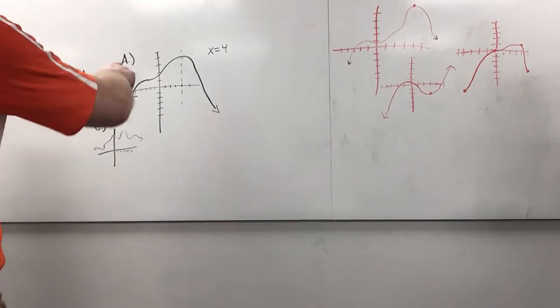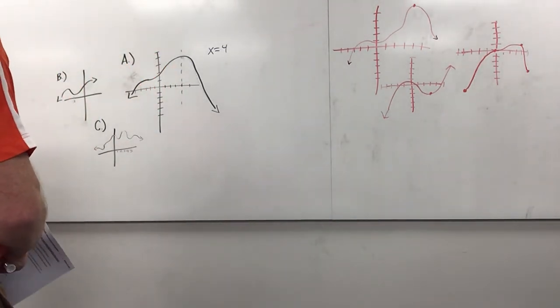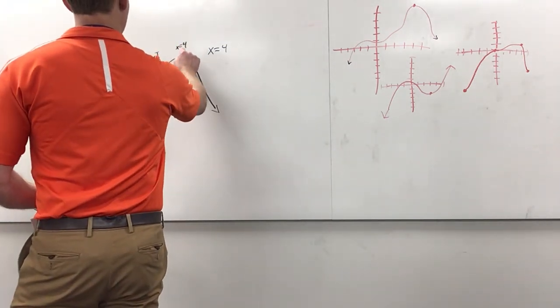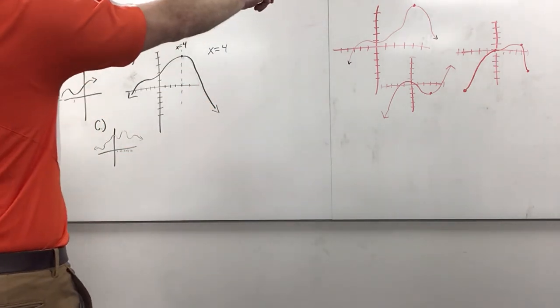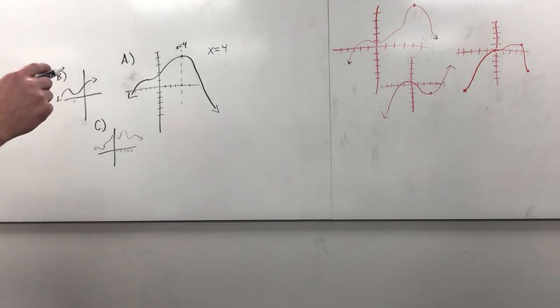So for part A, we said an absolute maximum at x equals 4. Here's x equals 4, and this would be the highest point there. It's going down here, that looks good. Micah, yours is good. Ian looks good, and Hudson as well.